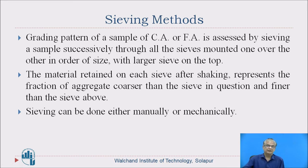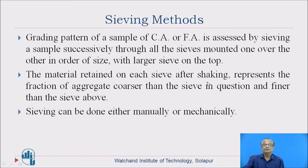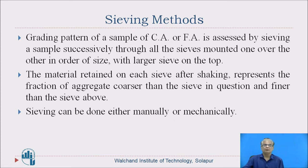What are the sieving methods? The grading pattern of a sample of coarse aggregate and fine aggregate is assessed by sieving a sample successively through all the sieves mounted one over the other in order of size, with the larger sieve on the top. The material retained on each sieve after shaking represents the fraction of aggregate coarser than that sieve and finer than the sieve above. Sieving can be done either manually or mechanically.